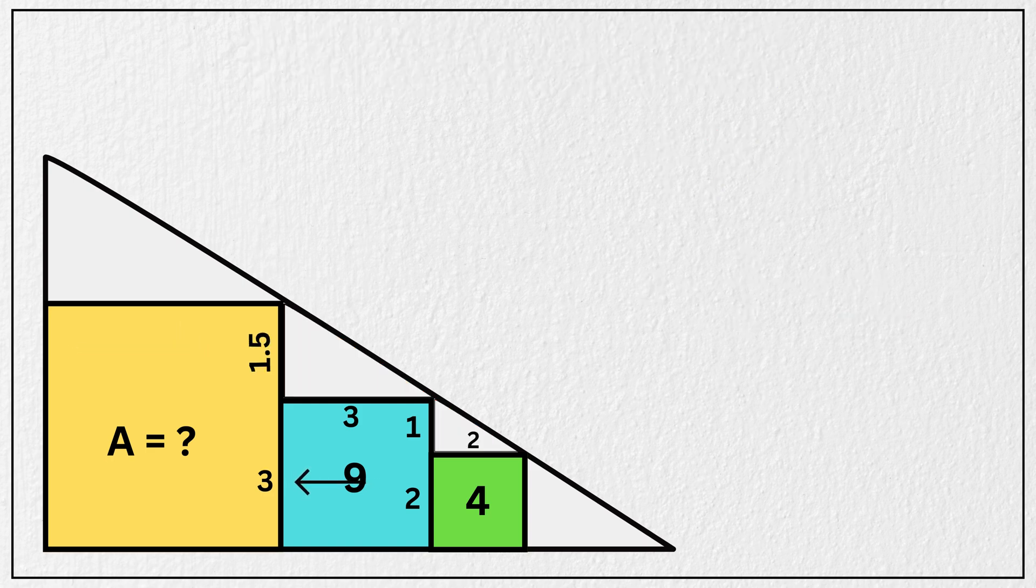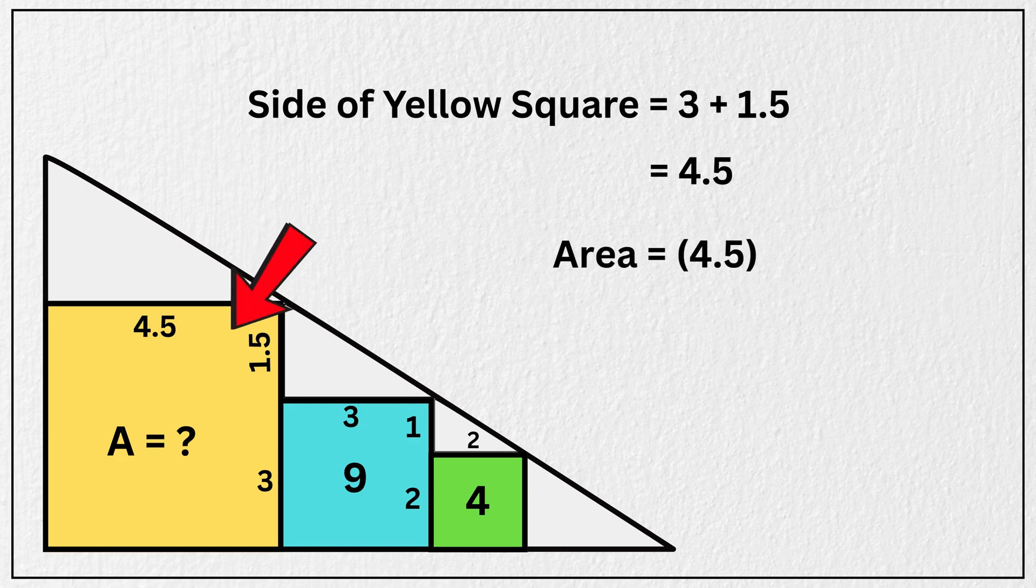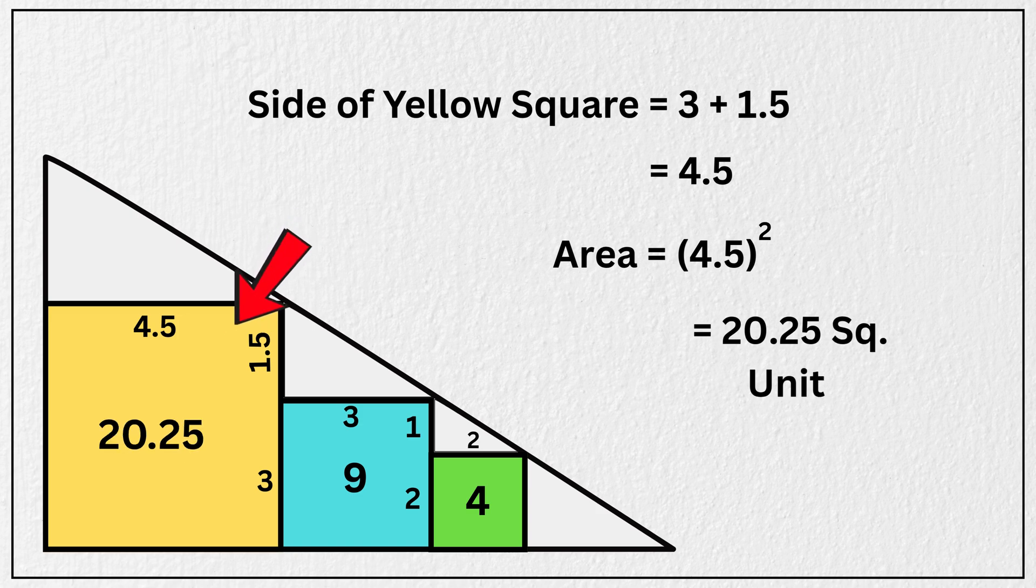We already knew the side length of this middle square which is 3. Now if the extra height next to it is 1.5, then the side length of the largest square must be 3 plus 1.5, which equals 4.5. So the area of this square will be square of 4.5, which is 20.25 square units. And there you have it. The area of the largest square is 20.25 square units, and that's our answer.